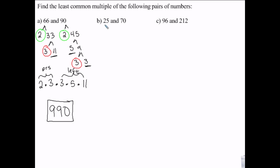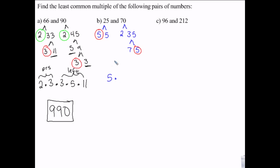25 doesn't factor further. 70 is 2 times 35, which is 7 times 5. The only thing in common is a 5. So I take one 5 from the pair, then a 5, a 2, and a 7 are left over. That gives me 25 times 14, so 350.